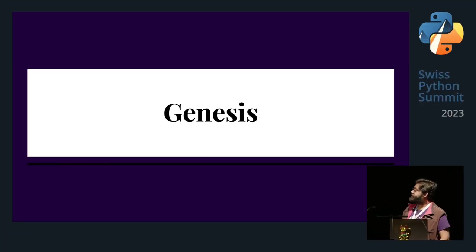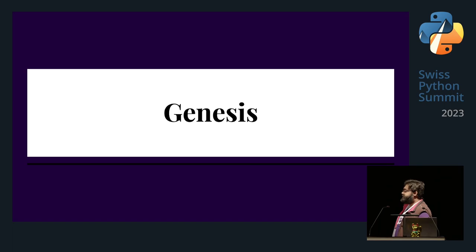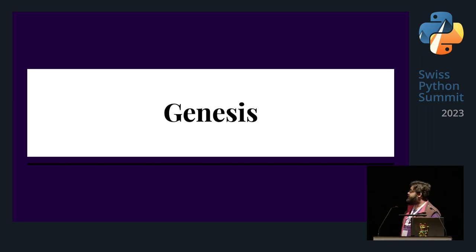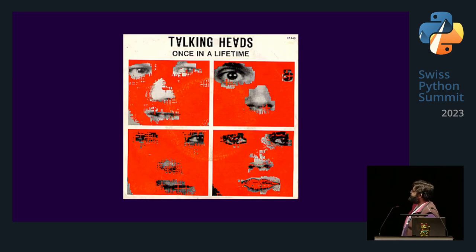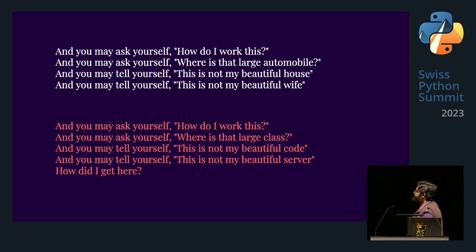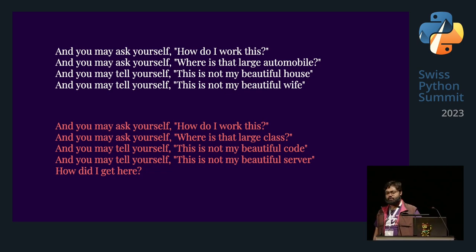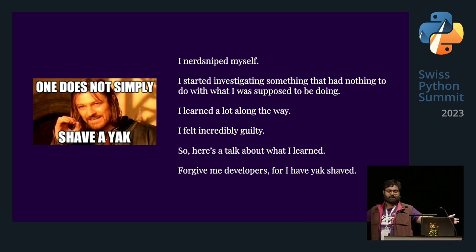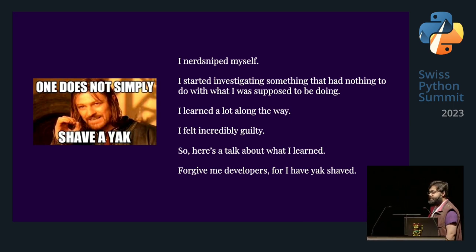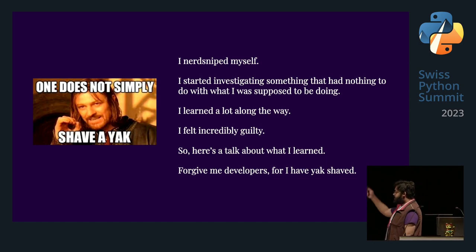So let's talk about how this talk started. I was having a really bad day and as one does when they are stuck in some bit of code, they go do something else. So I was watching my favorite episode of Chuck, and in this episode there was this song called Once in a Lifetime. In this song there was this quote: how do I work this? What is that large automobile? This is not my beautiful house, this is not my beautiful wife — and I just thought to myself, this is not my beautiful server. How did I get here? So forgive me developers, for I have yak shaved. I went down this rabbit hole, I figured out a couple of things, I did not solve that problem, I eventually left that job, but you now have this talk.